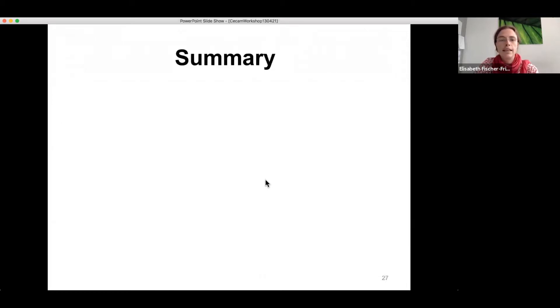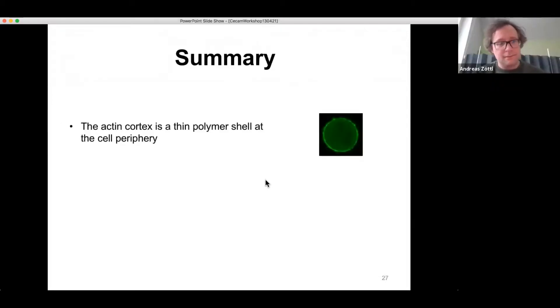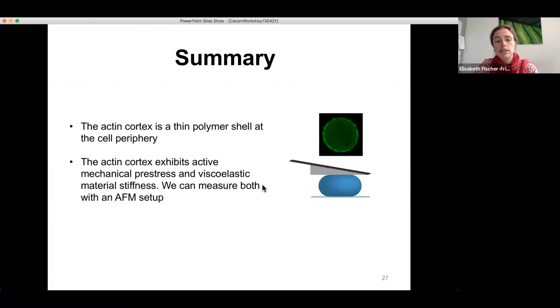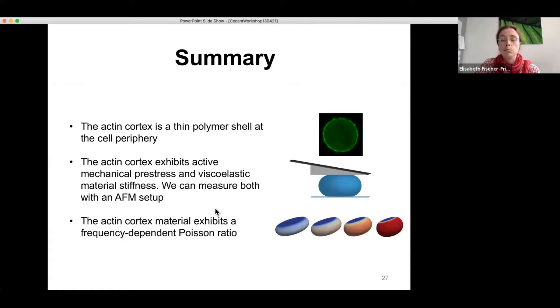And with this, I'm at the end, let me quickly summarize. So the actin cortex is a thin polymer shell at the periphery of the cell, important for cell shape regulation and cell mechanical integrity. And we can measure actin cortex mechanics and also its pre-stress with our atomic force microscopy setup. And in particular, we could also extract the frequency dependent Poisson ratio of the actin cortex and see that it's indeed changing with timescale.